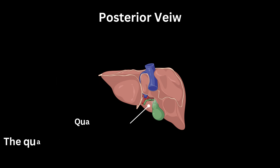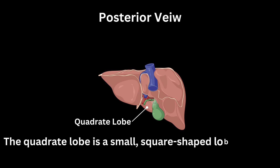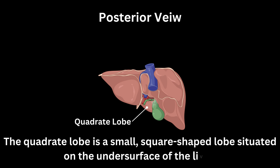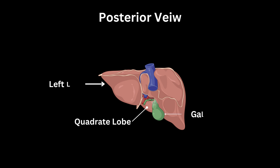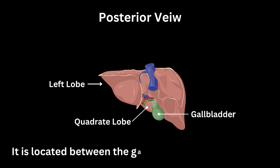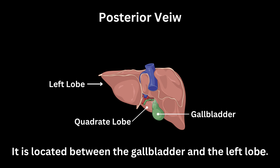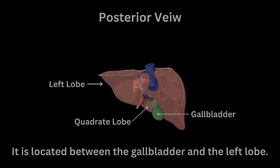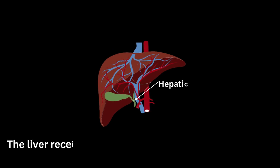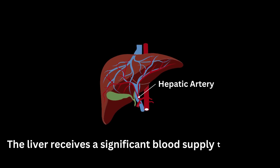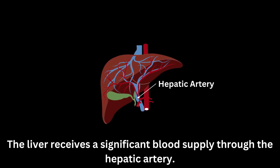The quadrate lobe is a small, square-shaped lobe situated on the undersurface of the liver. It is located between the gallbladder and the left lobe. The liver receives a significant blood supply through the hepatic artery.